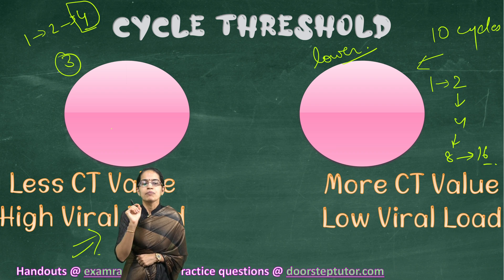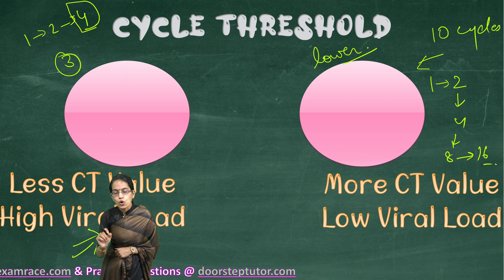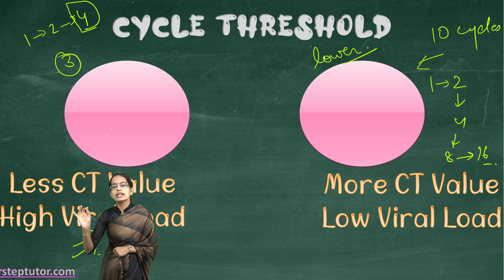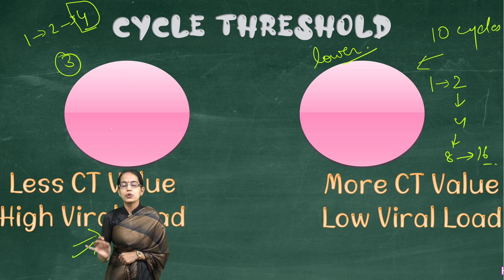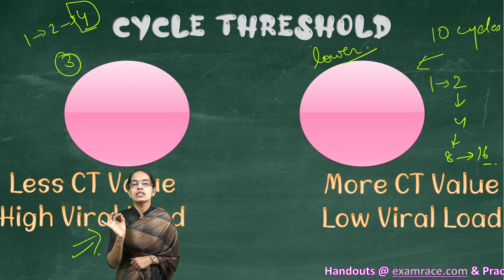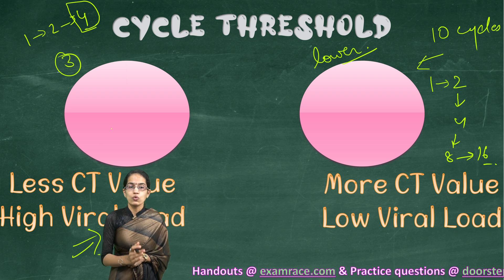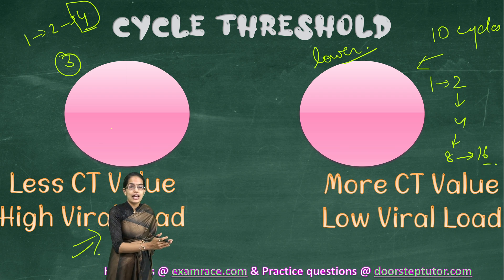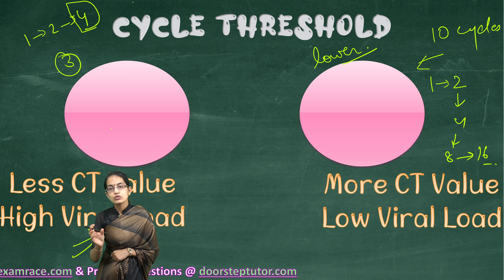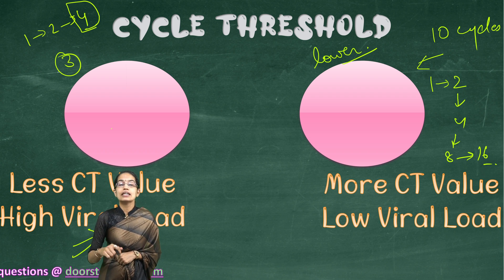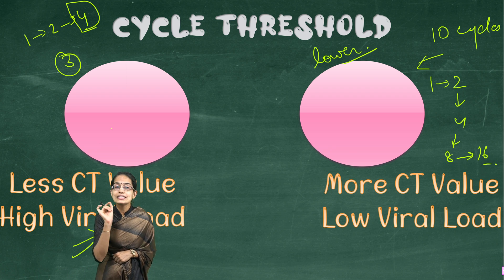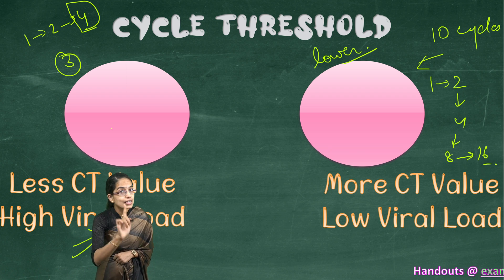In a RT-PCR test, if the CT value is low, it indicates higher viral load. If the CT value is high, it indicates lesser viral load. In case of India, the standardized value is 35 — values below 35 are considered COVID positive. Lower the values, more the viral load; higher the values — values close to 35, around 30 to 35 — indicate lesser viral load. This is what is meant by a CT value in a RT-PCR test.